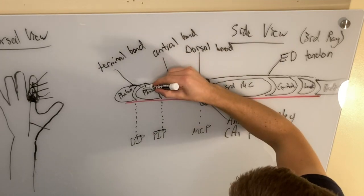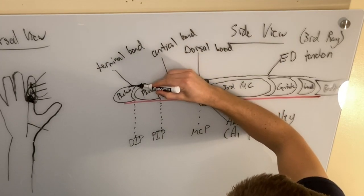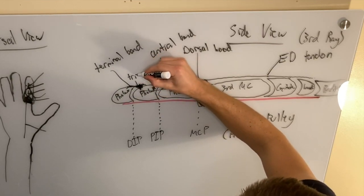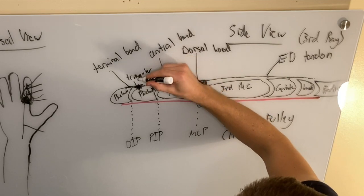And then this extra thickening here, which is called the triangular ligament.